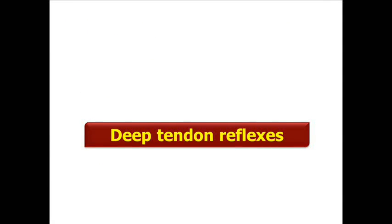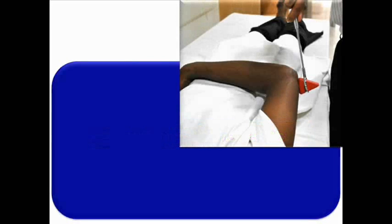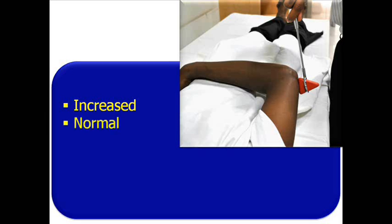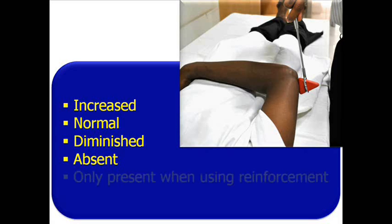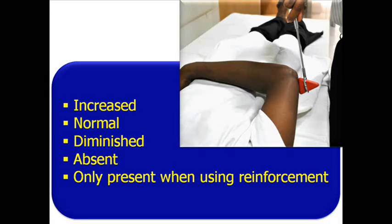A tendon reflex is an involuntary contraction of a muscle in response to stretch. The subject should be completely relaxed. Flex your wrist and allow the weight of the tendon hammer head to determine the strength of the blow. Strike the tendon and not the muscle. Record your responses as increased or hyperactive, normal, diminished, absent, or only present when using reinforcement. The homologous reflex on the opposite side should also be tested immediately for comparison.